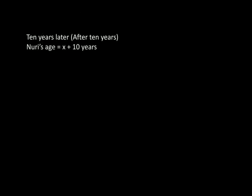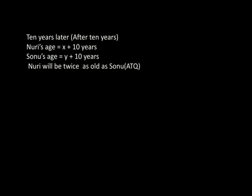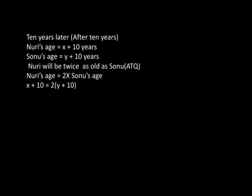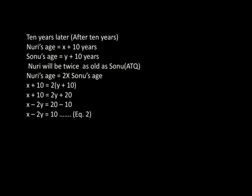10 years later — that is after 10 years — Nuri's age is x plus 10 and Sonu's age is y plus 10. The condition is that Nuri will be twice as old as Sonu, so x plus 10 equals 2 into y plus 10. Solving: x plus 10 equals 2y plus 20, so x minus 2y equals 20 minus 10, giving x minus 2y equals 10. That is equation number 2.